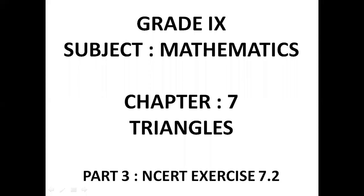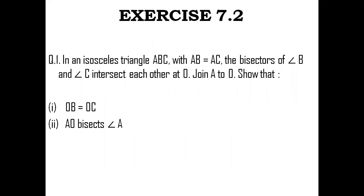Welcome to another session of Grade 9 Mathematics, Chapter 7, Triangles. Dear students, in this third part of the chapter, we shall discuss in detail the solutions to NCERT Exercise 7.2. Let us get to the first question of Exercise 7.2, which says: In an isosceles triangle ABC with AB equal to AC, the bisectors of angle B and angle C intersect each other at O. Then join A to O. No figure is given, so we will make a figure with the given data as part of the solution.